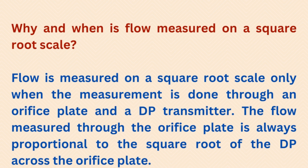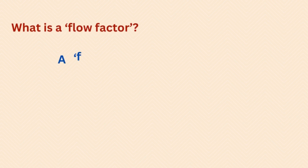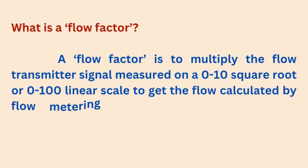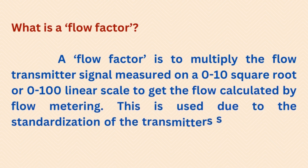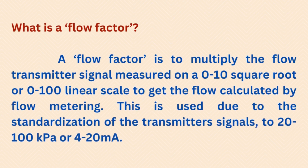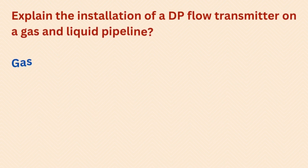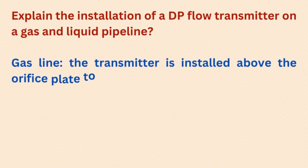What is a flow factor? A flow factor is used to multiply the flow transmitter signal, measured on a 0 to 10 square root or 0 to 100 linear scale, to get the flow calculated by flow metering. This is used due to the standardization of transmitter signals to 20 to 100 kilopascal or 4 to 20 milliampere.